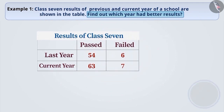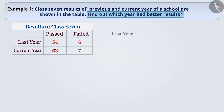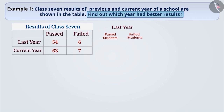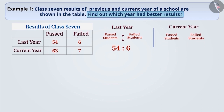To find the answer, first take the ratio of the number of students who passed last year to the number of students who failed last year, which is 54 is to 6. Then take the ratio of the number of students who passed this year to the number of students who failed this year, which is 63 is to 7.